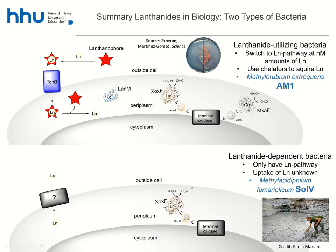The second type of bacteria is absolutely dependent on lanthanides. Their energy metabolism requires a lanthanide-dependent enzyme, so without lanthanides they cannot live or grow. One such bacterium has been isolated from a volcanic mud pot, which sounds extreme, but these lanthanide-dependent bacteria are actually everywhere — you can find them in garden soil as well.